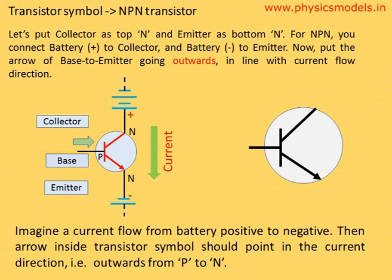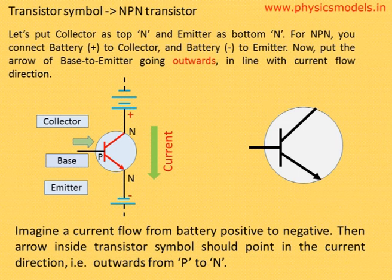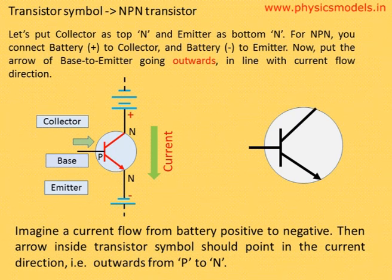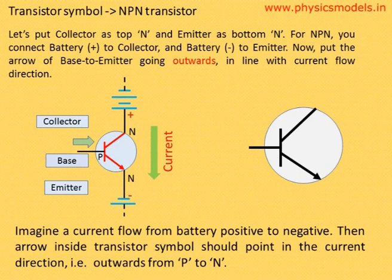Now we come to the symbol of an NPN transistor and how to write that correctly in a circuit. The symbol is basically a white circle with black lines inside it. You can see that N, P, and N are represented by three wires as we saw before. The central wire is the P, which is coming out at the center of that circle towards the left. Then there are the other two wires: one wire connects the N semiconductor to the base, and the other wire with an arrow is again connecting the base to the N part of the semiconductor of the transistor.